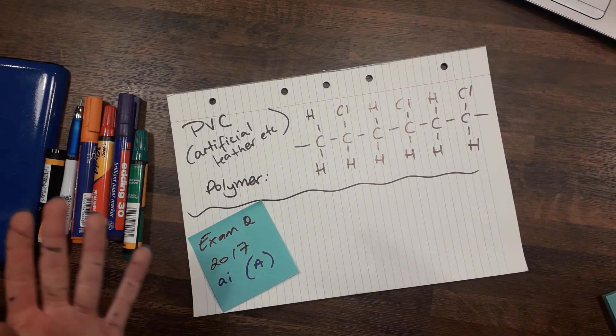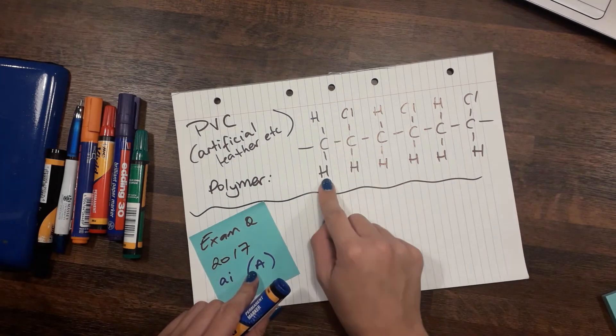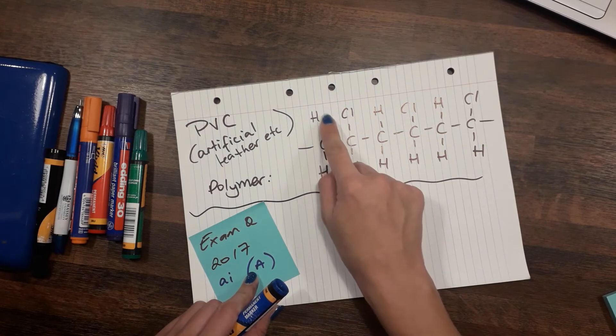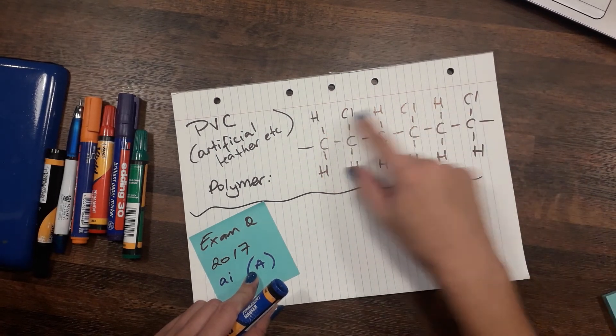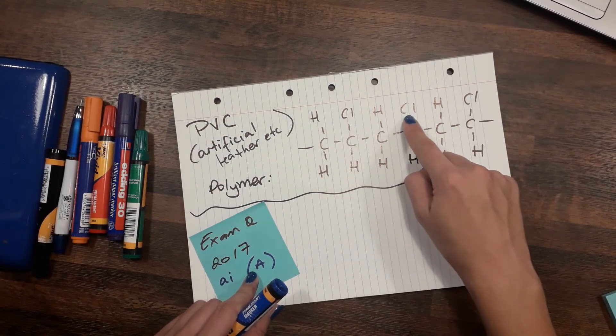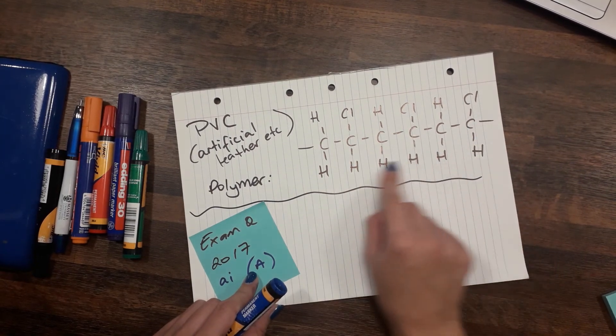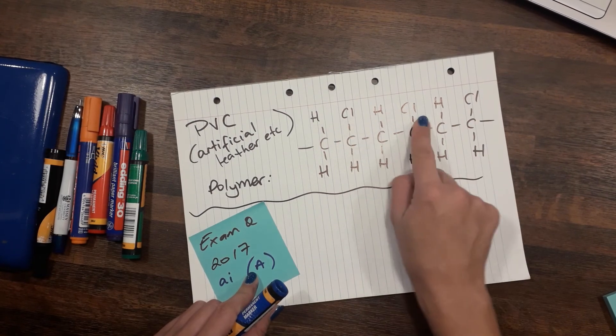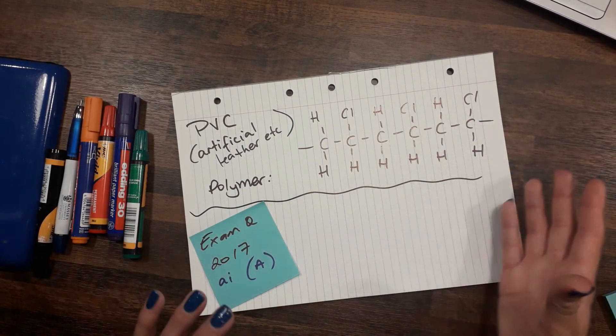You just have to look for, where is this repeating? So we have C, HH, C, CLH, right? That has come up again. You can see every second carbon has got that CL. All along the bottom here are H, so it's not going to help you. So you're looking up the top here. Every second carbon is alternating between hydrogens and chlorines.